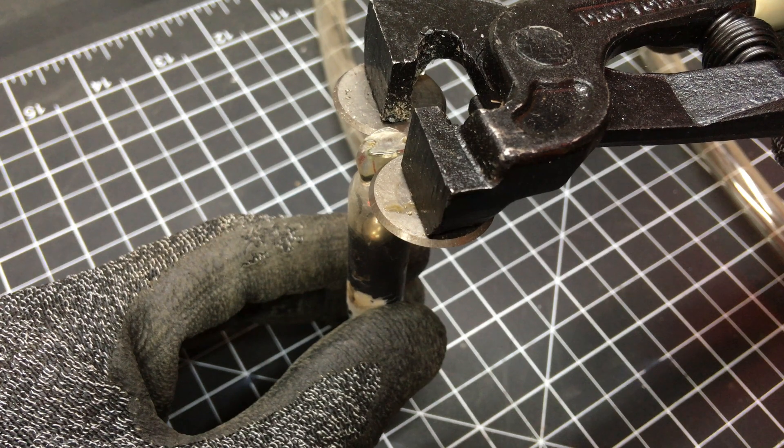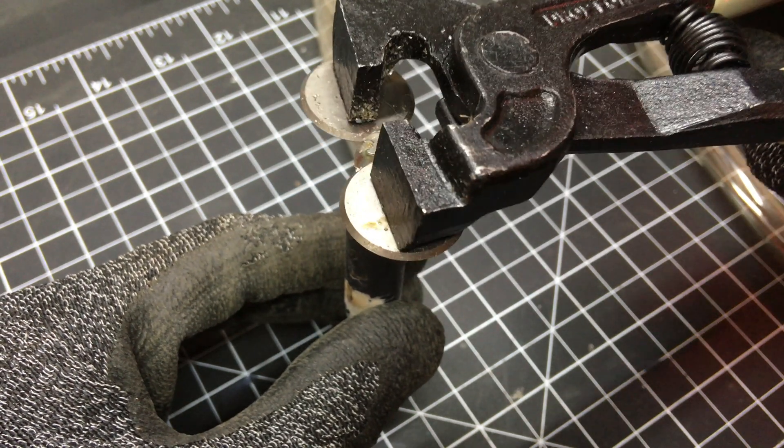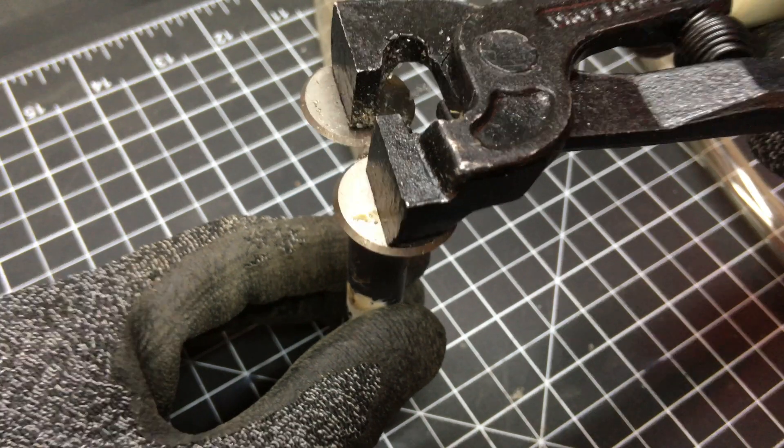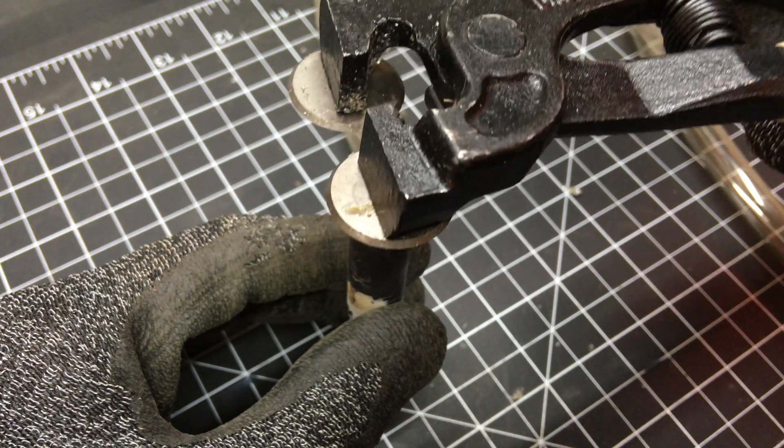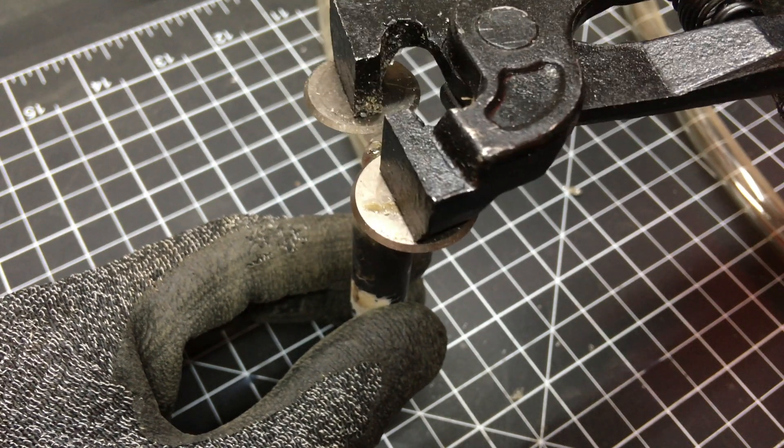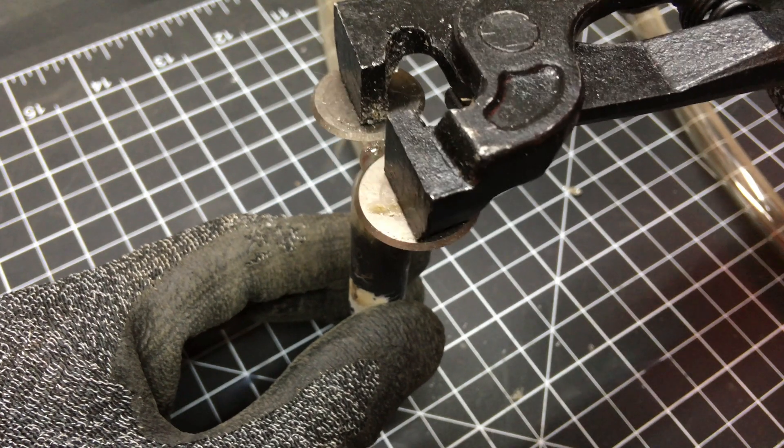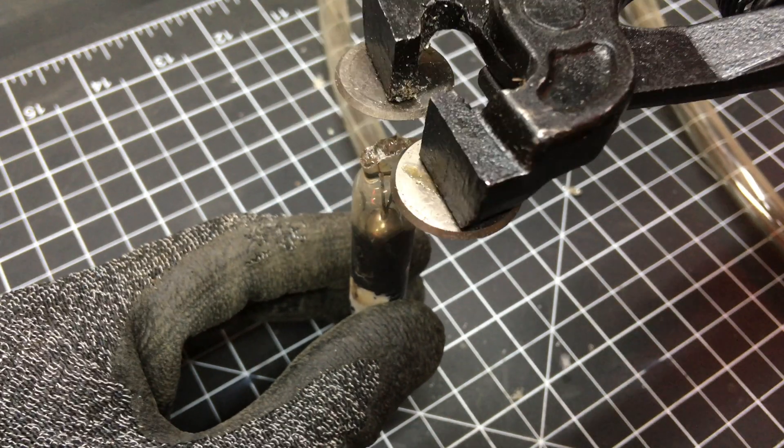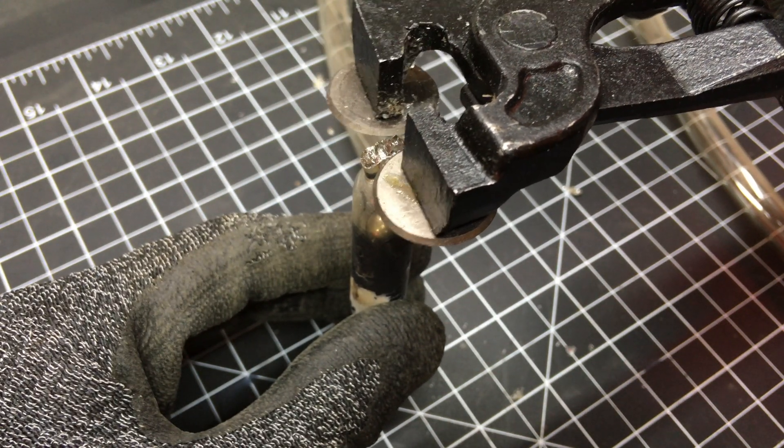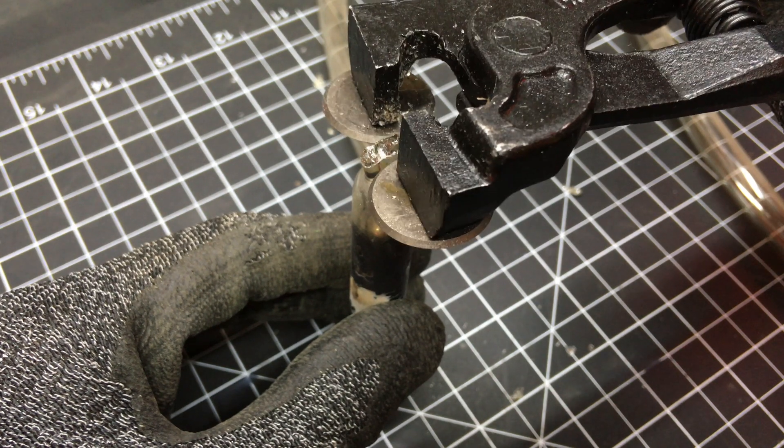Now comes the moment of truth, breaking the glass, but hopefully just a little. We need enough of the electrode wire exposed so we can attach an extension, but if too much is exposed, it can compromise the glass-to-metal seal and cause the tube to leak.